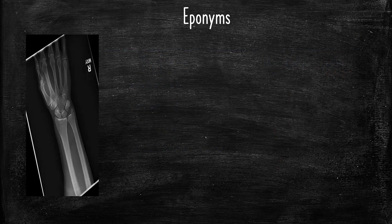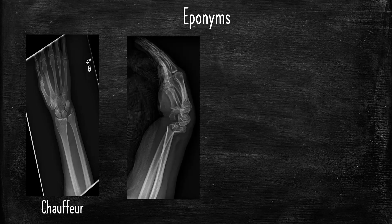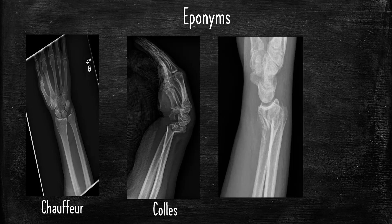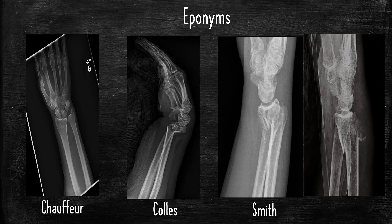Eponyms — blast through these. Radial styloid fragment: that's called a Chauffeur. A dorsal angulated distal radius: that's called a Colles. If it's volarly angulated, that's a Smith. And if it's a dislocated radiocarpal joint, that's a Barton — this is a volar Barton because it's volarly displaced.